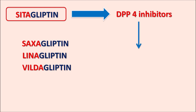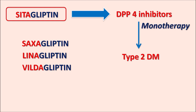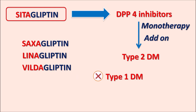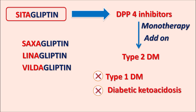Cetagliptin is a DPP-4 inhibitor useful in the treatment of type 2 diabetes mellitus, along with exercise and diet control, to regulate glucose levels. It can be given as monotherapy or combined with other drugs as add-on therapy to better control glucose levels by promoting insulin release. However, cetagliptin is not useful in type 1 diabetes mellitus or in patients with diabetic ketoacidosis.